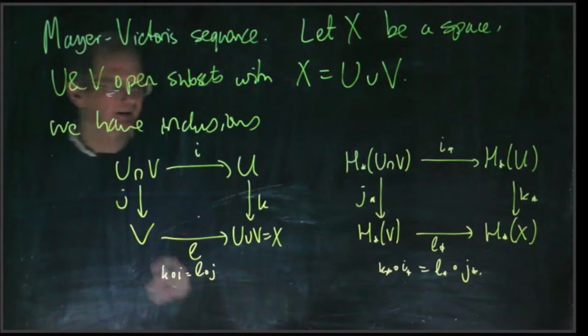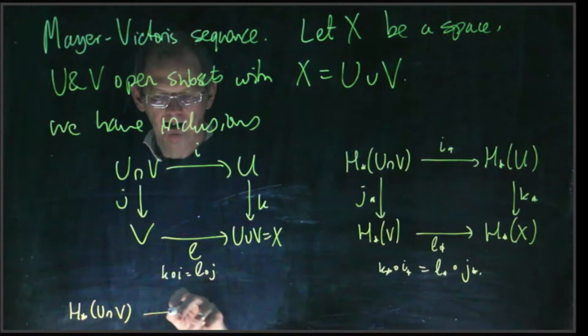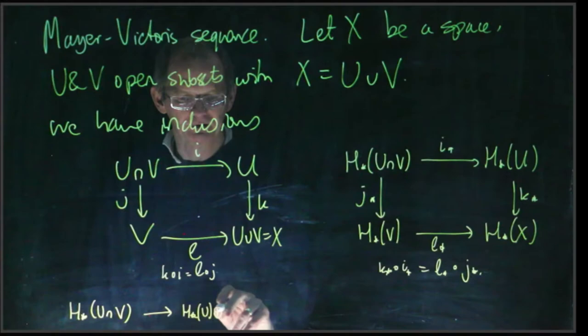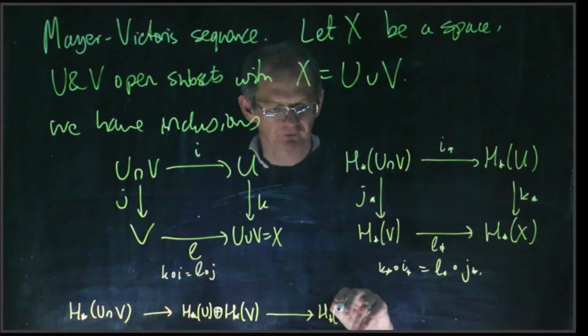We can reorganize that information slightly. Let's look at this sequence: we're going to take the homology of the intersection, then go to the homology of U plus the homology of V, and then to the homology of X.